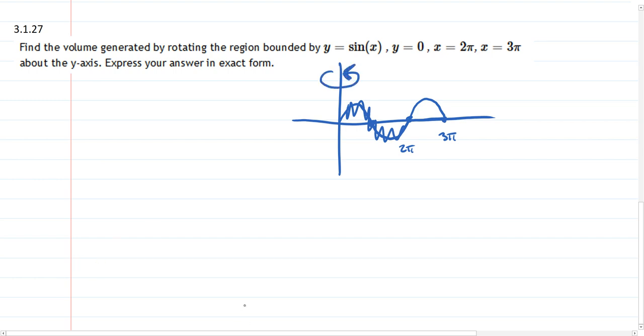Now we can choose if we want to go disk method, rotate this around the y-axis you get a disk, or shell method or cylinder method. We're going to use the cylinder method because it's this hollow shape, so I'll draw what this rotates into.